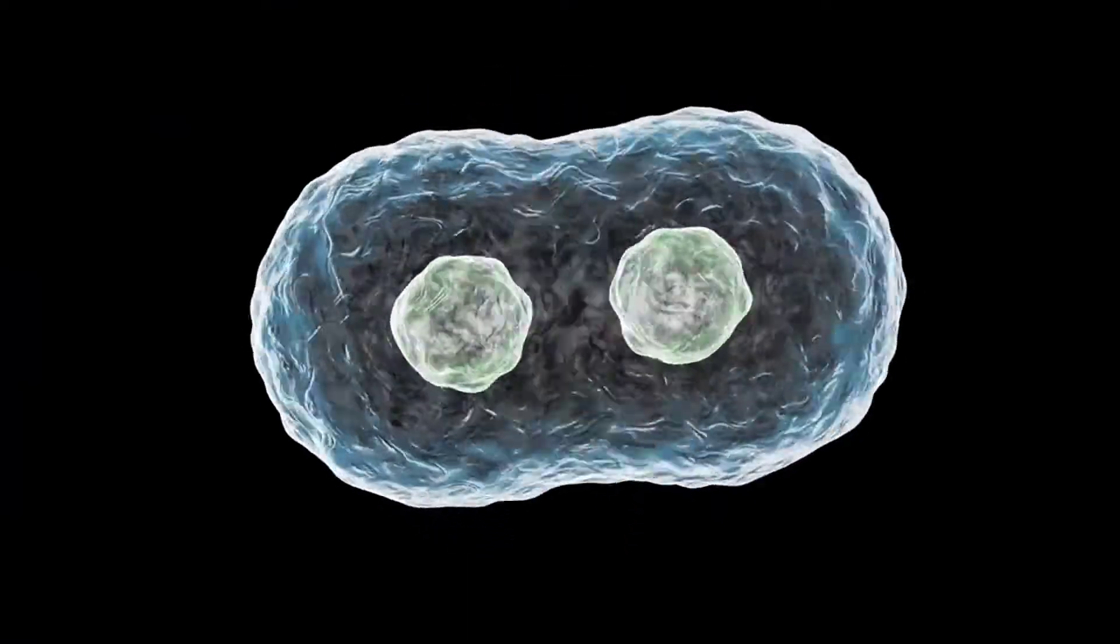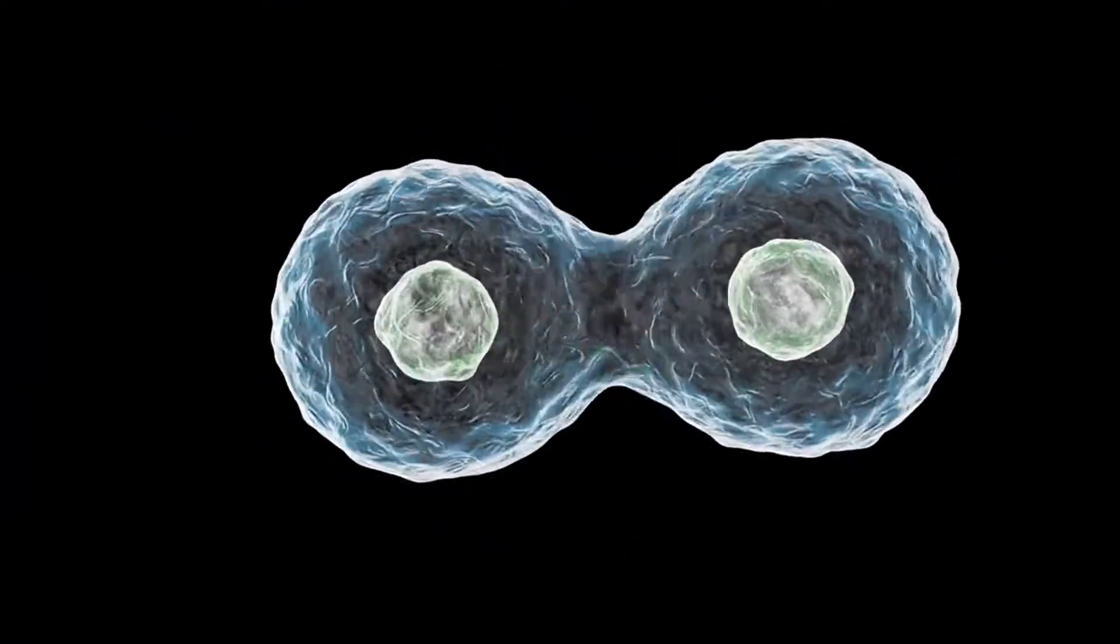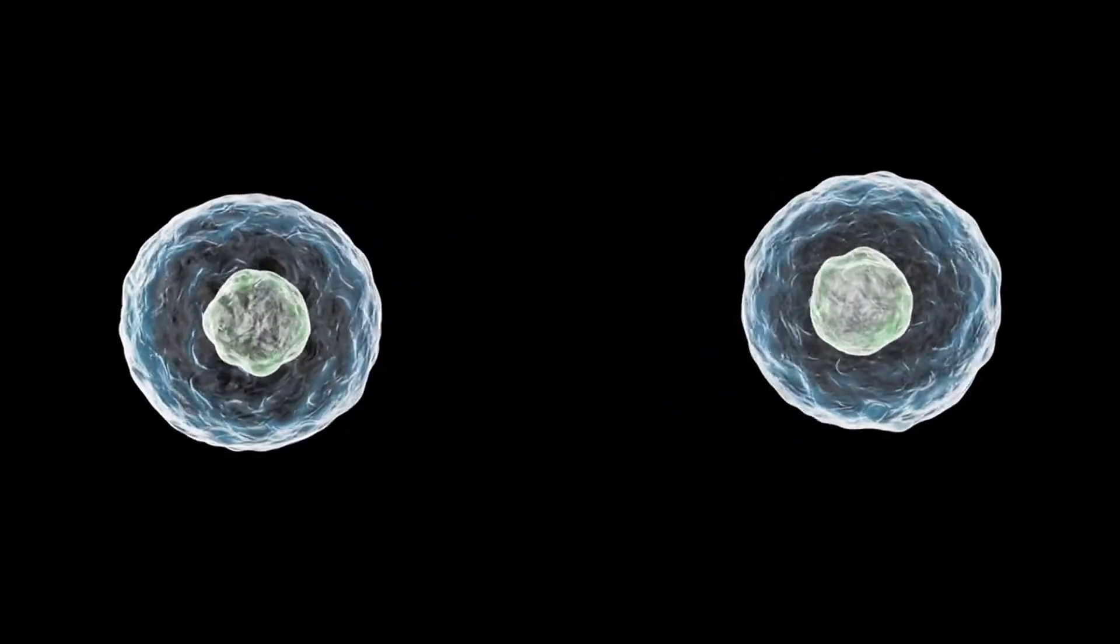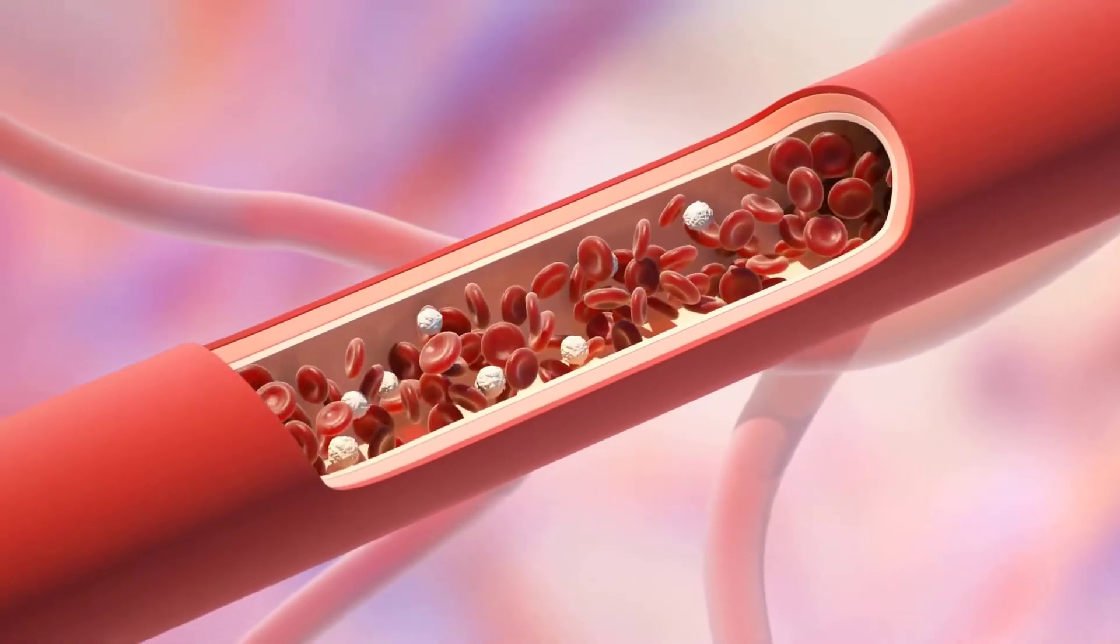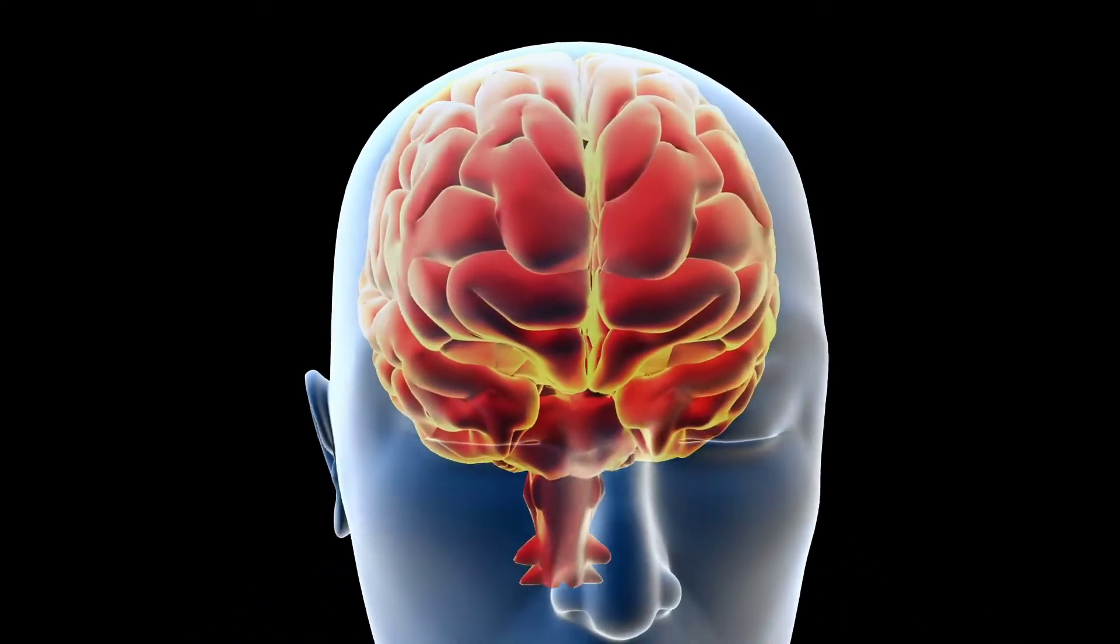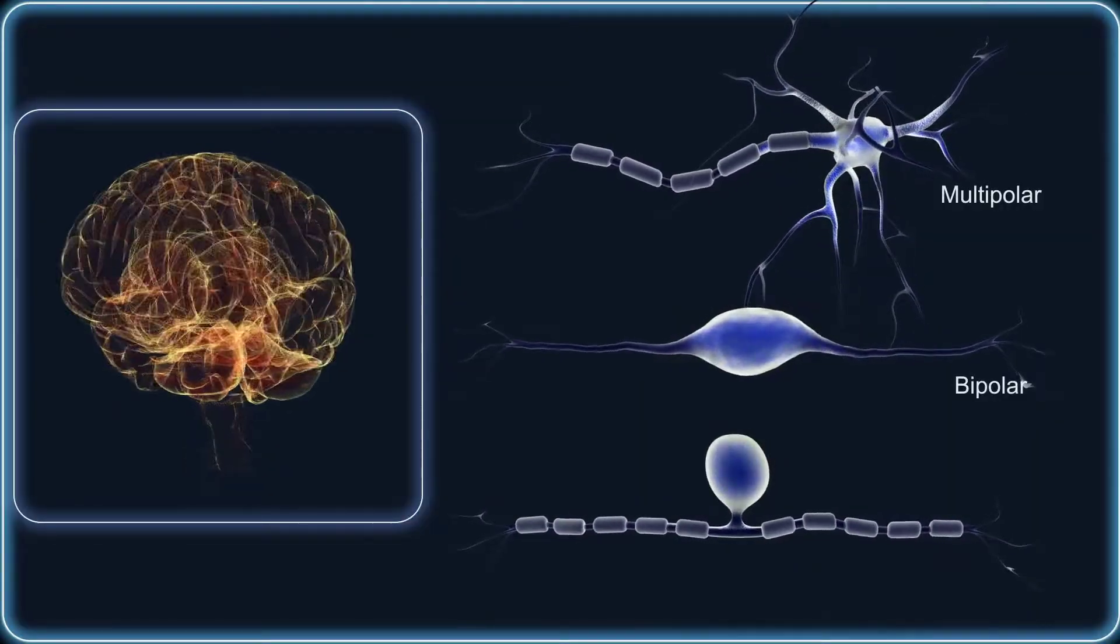The cell membrane keeps the internal environment, that is, the fluids and organelles, separated from the external environment. Blood vessels keep blood inside a closed circulatory system. Nerves and muscles are wrapped in connective tissue sheaths that separate them from surrounding structures.